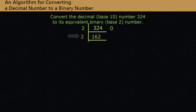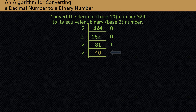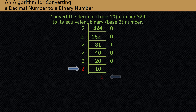Now divide 2 into 162. If we divide 2 into 162, we get a quotient of 81 with a remainder of 0. Now divide 2 into 81. If we divide 2 into 81, we get a quotient of 40 with a remainder of 1. Now divide 2 into 40. If we divide 2 into 40, we get a quotient of 20 with a remainder of 0. We repeat these steps until we get a quotient of 0.